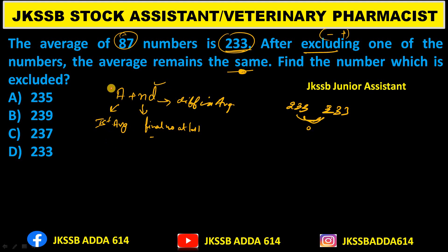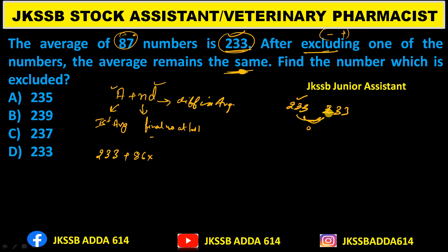Let's apply the formula. 'a' is the first average: 233. 'n' is the final number — original was 87, now one number is excluded, so n = 86. 'd' is the difference in average: first average was 233, after removing one number the average remains 233, so the difference is 0.